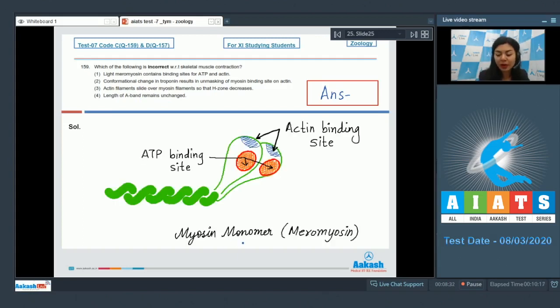A meromyosin or a myosin monomer is made up of two parts - a globular head and a tail region. The globular head portion is also called as heavy meromyosin, while the tail part is called as LMM or light meromyosin. And the binding sites for ATP and actin which are seen here is present in the head or heavy meromyosin. So this statement that is present in the light meromyosin is incorrect.